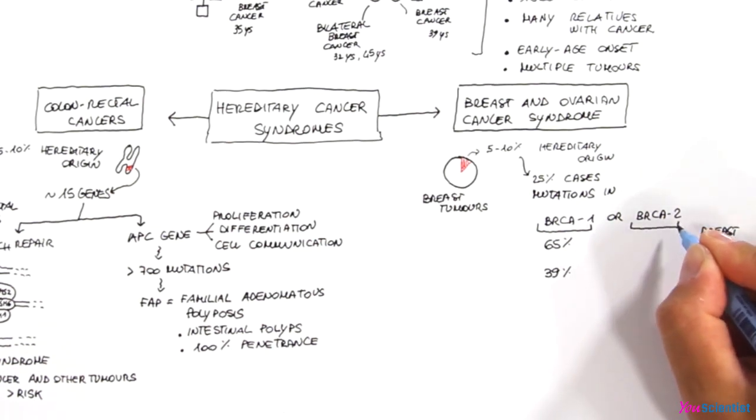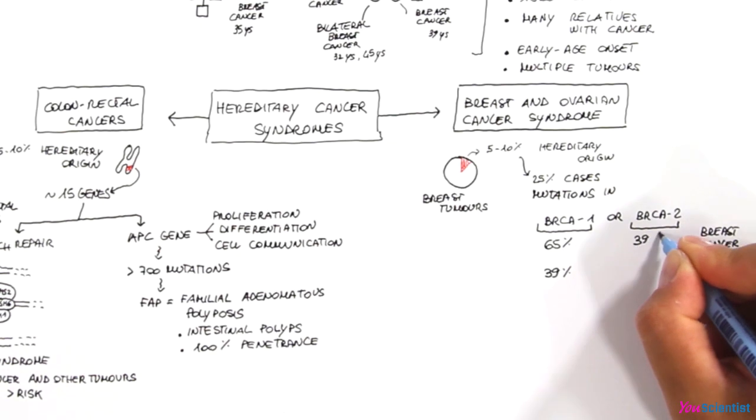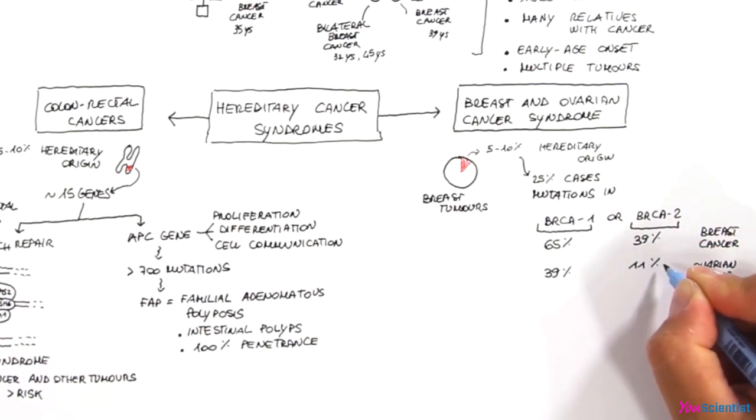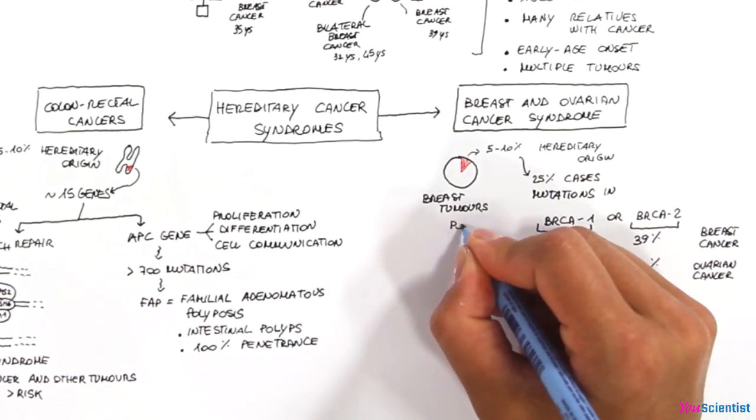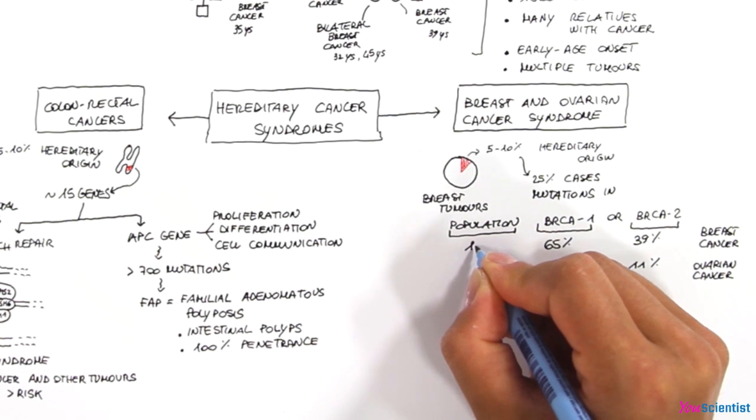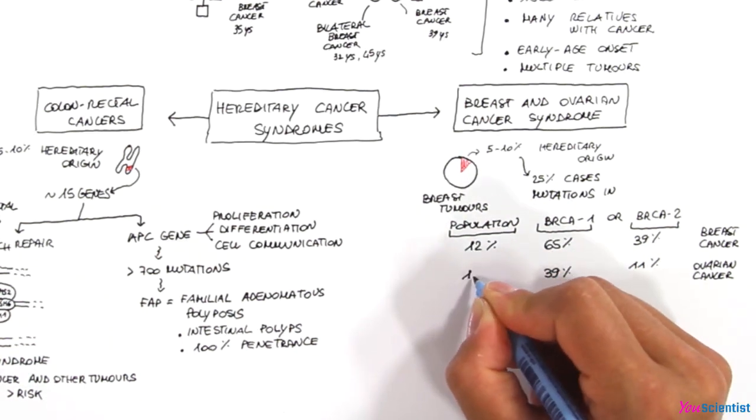Mutations in BRCA2 carry a risk of 39% and 11% respectively. For the rest of the population that does not carry mutations in BRCA1 or BRCA2 genes, lifetime risk to develop breast and ovarian cancers is significantly lower.